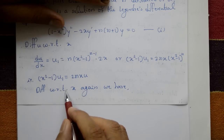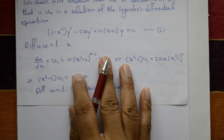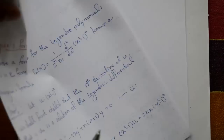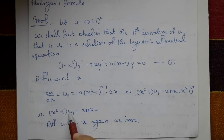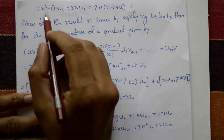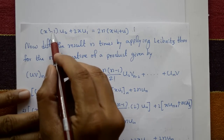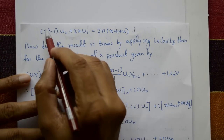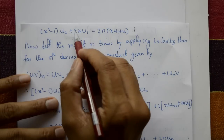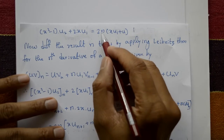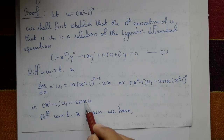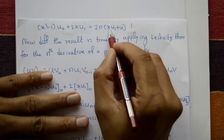Now differentiate this equation once more with respect to x. Using the product rule on the left side: (x² - 1)·u₂ + u₁·2x = 2n·[x·2x + (x² - 1)]·u₁... equals right-hand side 2n times u₁ plus u.